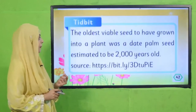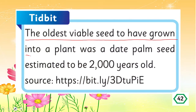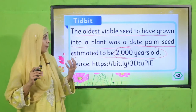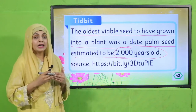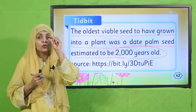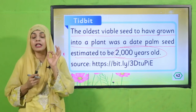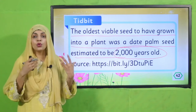Tidbit: The oldest viable seed to have grown into a plant was a date palm seed estimated to be 2,000 years old. This means a seed that was 2,000 years old was successfully grown into a new date palm plant when planted in the ground.